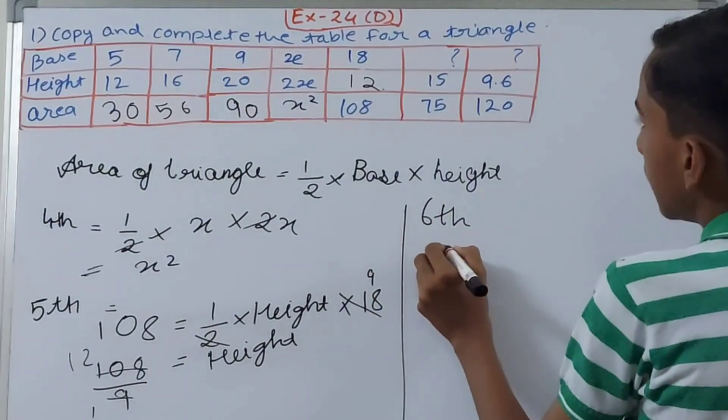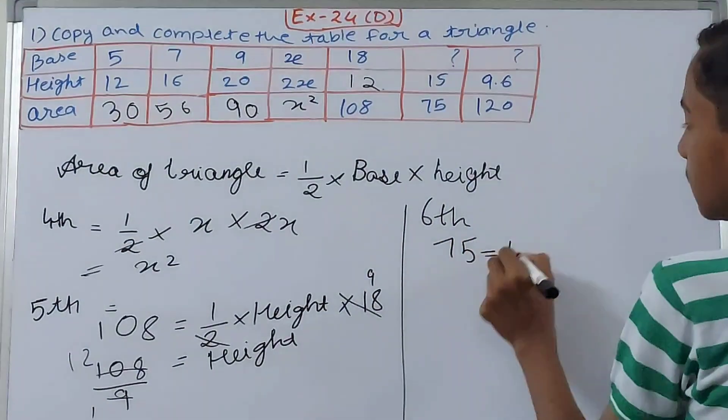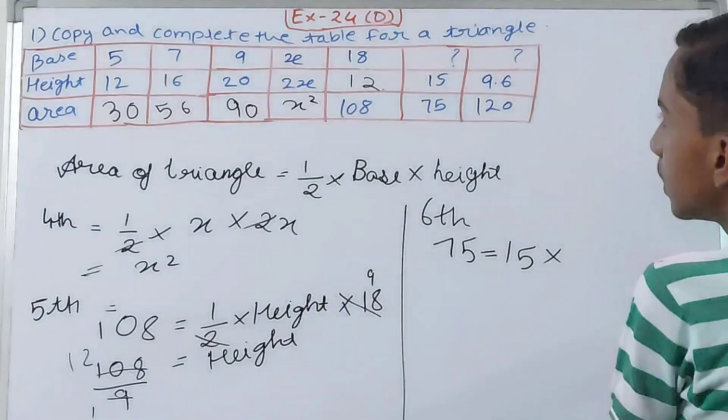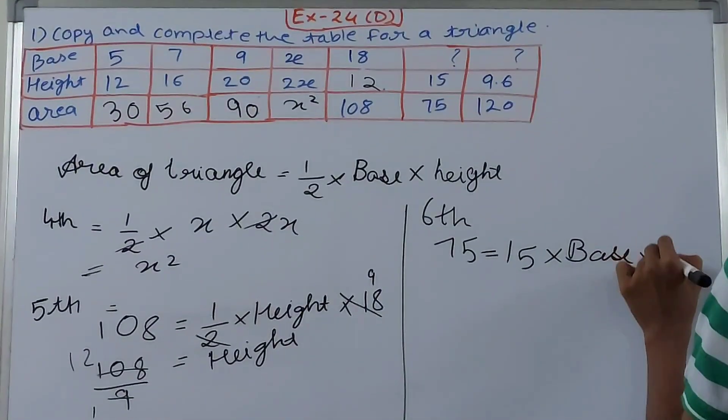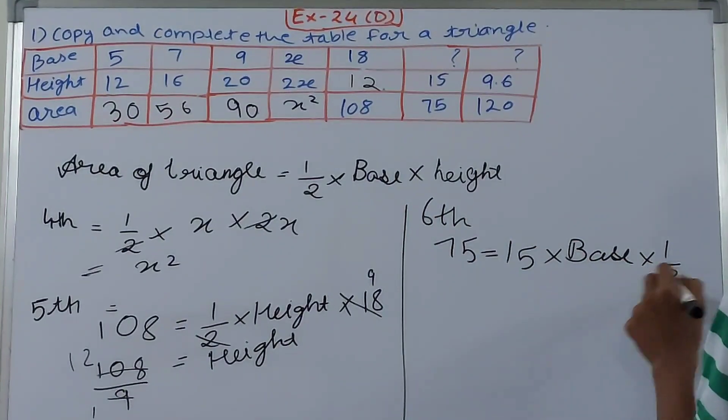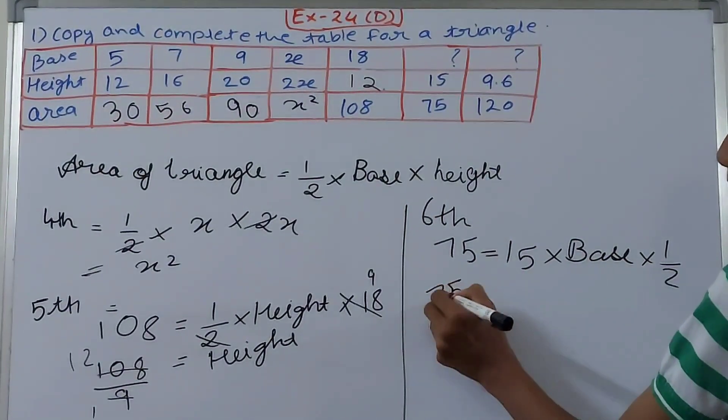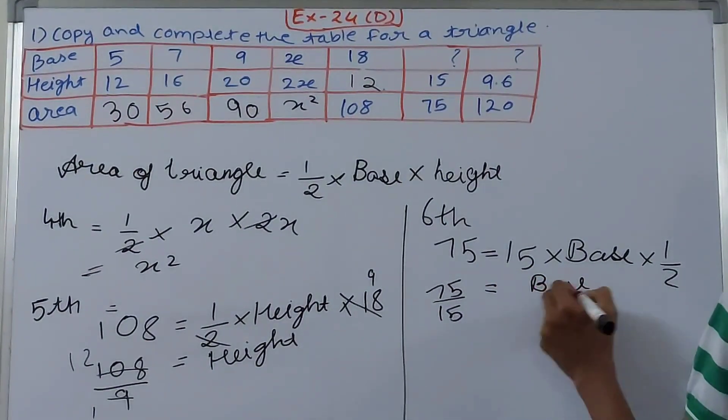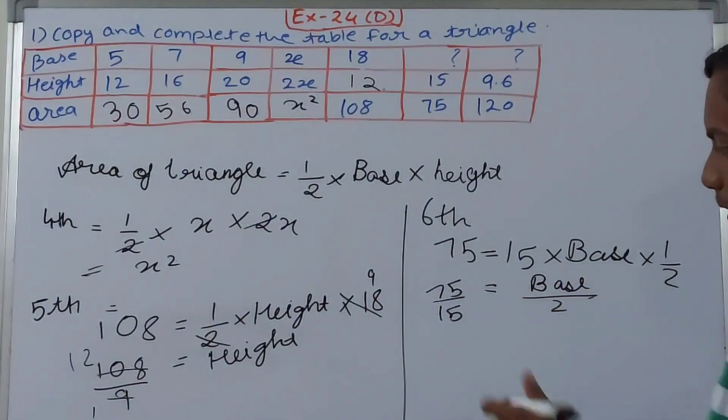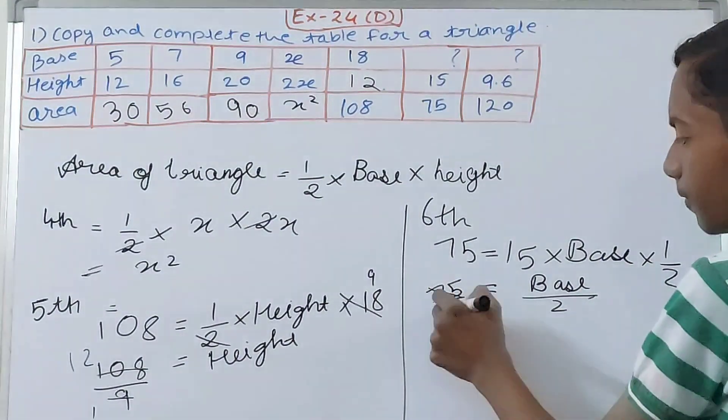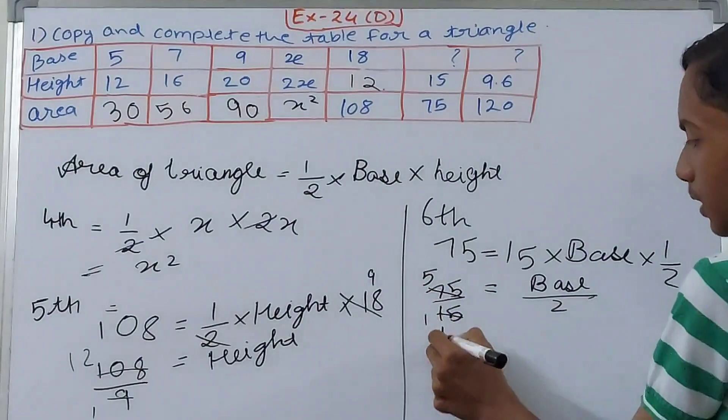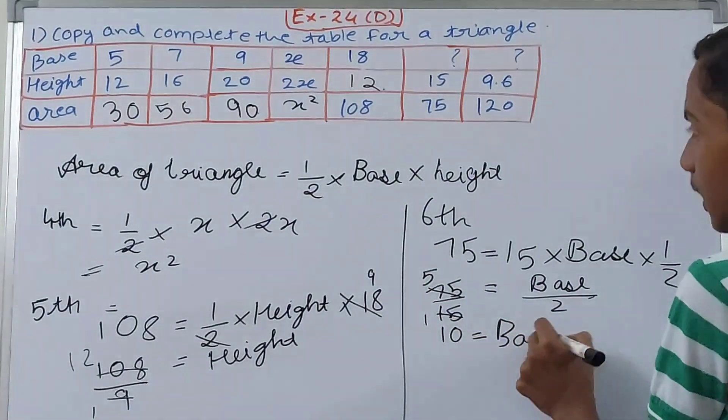Then in the sixth one, area is given. 75 equals 15 into 1/2 into base. The order does not matter. 75 by 15 equals base upon 2. This will be 1 and 5, so 5 equals base into 2. This 2 comes here so 10 equals the base. Put here 10.